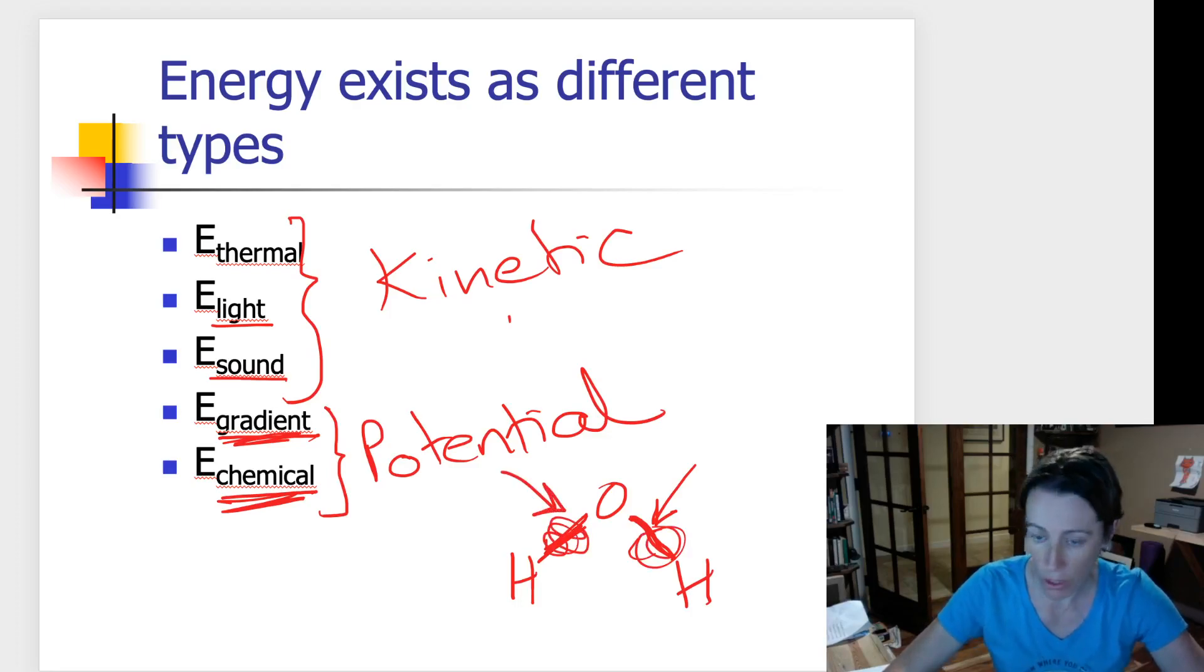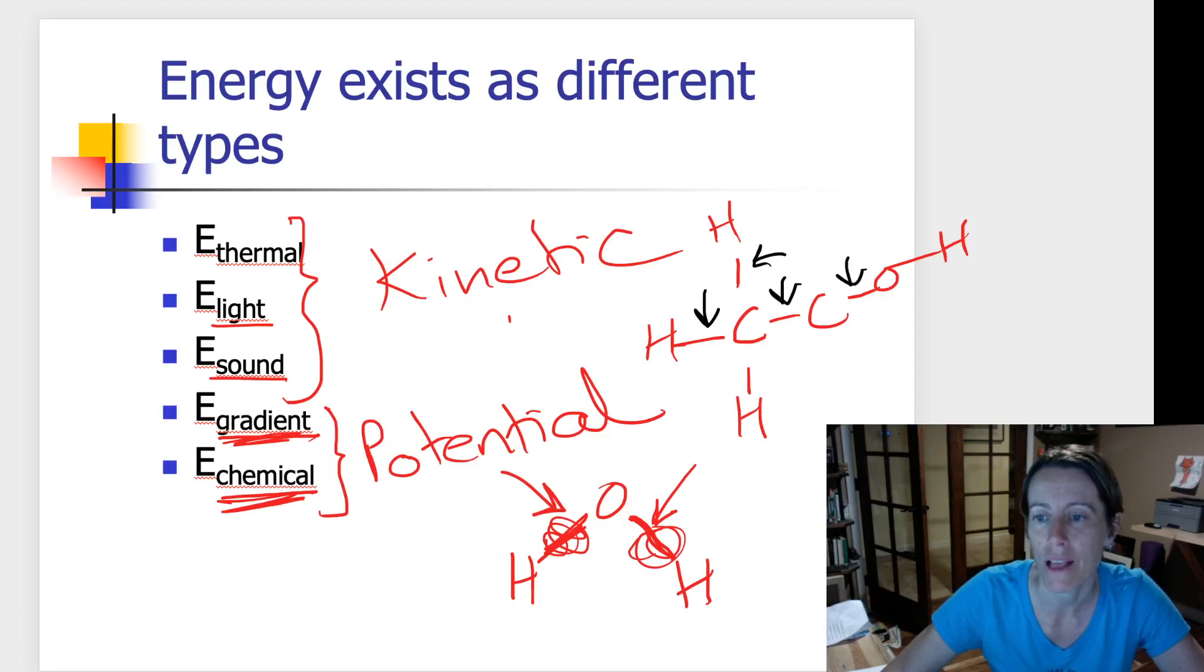Any time you have a molecule with bonds, there's energy stored in it. If I was going to draw alcohol, which is ethanol, it looks like this, and there's H's here. Every single one of these bonds, and the bonds are the sticks that I've drawn. Every single one of these bonds represents energy trapped in that molecule. And you can release that energy, potentially, if you were to break those bonds, separate those atoms.